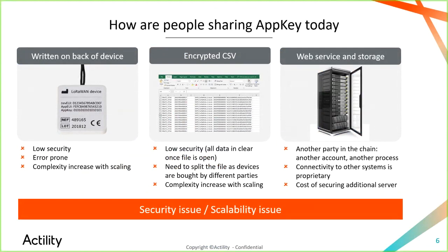It is also extremely complex to scale, because copying the AppKey into a join server may be error-prone. For mass provisioning, most of the time people are using small databases or Excel files with encrypted CSVs. The data is a little more secure, but that is only as good as you trust Microsoft Excel for security. And web services and storage add another party to the chain and the cost of securing that additional server.